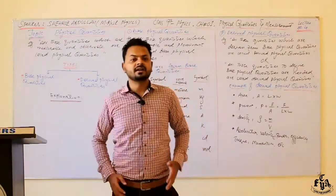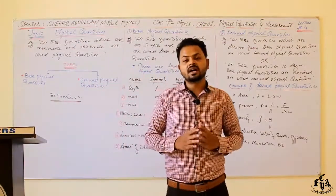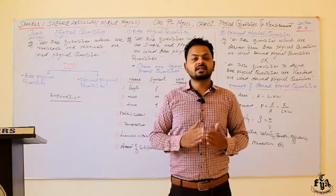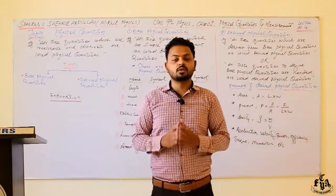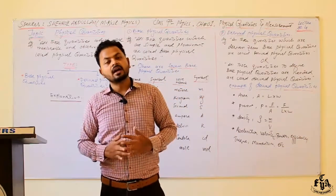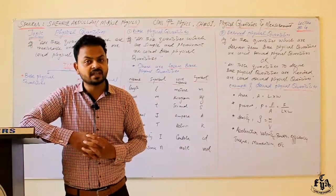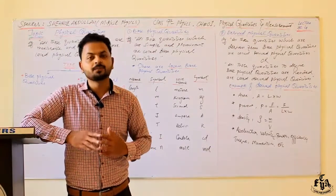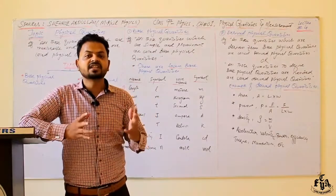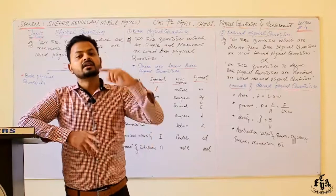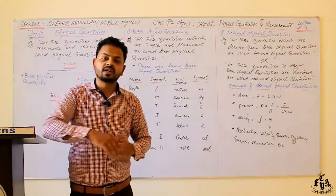To summarize today's lecture: we discussed physical quantities — those quantities which are measurable and observable. There are two types: base physical quantities, which are simple and prominent (seven examples), and derived physical quantities, which can be explained in terms of base physical quantities (many examples discussed). Hope you have enjoyed it. Thanks for watching.